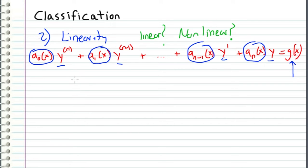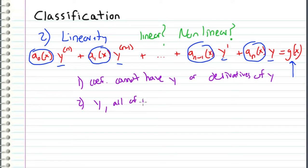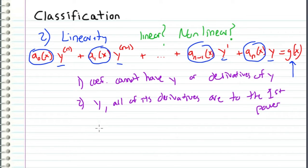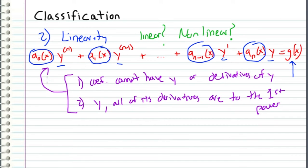We can simplify this into a couple of rules. The first is that coefficients cannot have y or derivatives of y — what is circled in blue cannot have y or a derivative of y, meaning it is only a function of x. The second rule is that our function y and all of its derivatives are to the first power, meaning there are no y squareds, no y double prime squareds, and no y triple prime times y prime. These two rules describe a linear differential equation. If it does not fit this form, then we call it nonlinear.